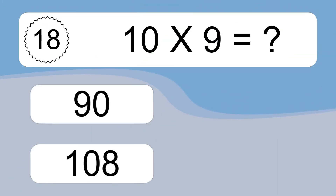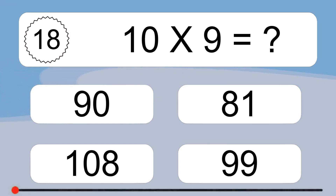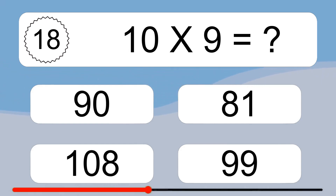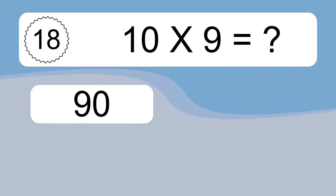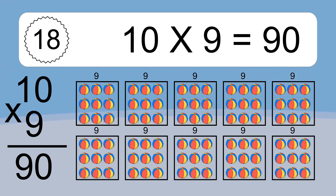10 times 9 equals what? 10 times 9 equals 90. We have 10 boxes, and each box has 9 colorful balls inside. If you count all the balls in all the boxes together, you will have 10 times 9 balls. This equals 90 balls.